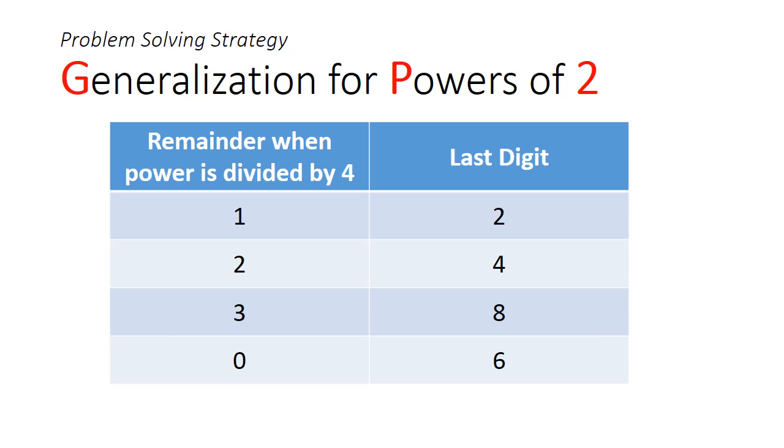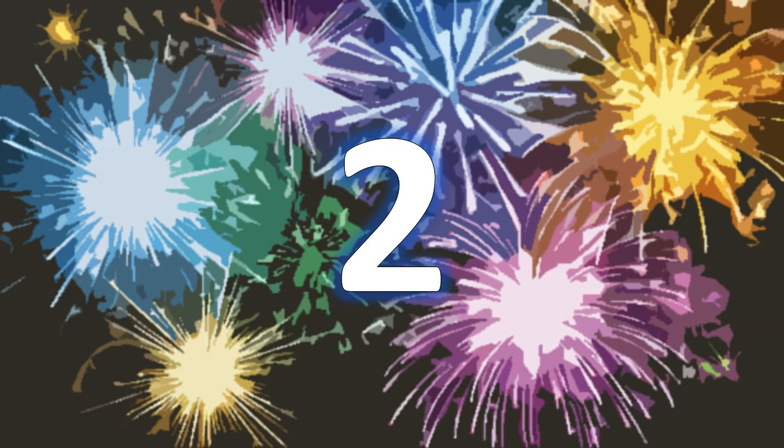You can further generalize this finding by looking at the remainder when the power is divided by 4. A remainder of 1 gives a last digit of 2, a remainder of 2 gives a last digit of 4, remainder of 3 gives 8, and if it is perfectly divisible by 4, you will get a last digit of 6. So no surprise here that the final answer is 2.